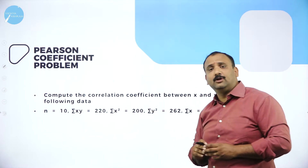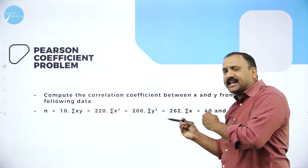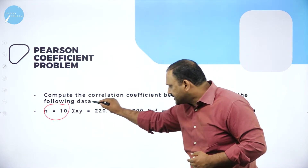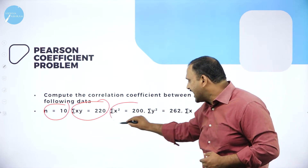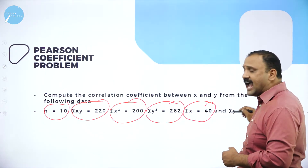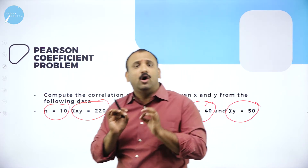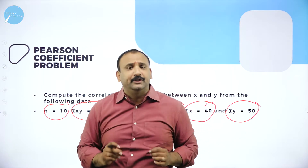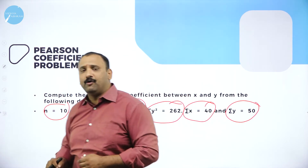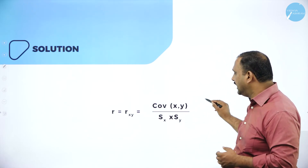Moving forward, let's look at a Pearson coefficient problem. We have the data here; we just put it into the formula and get the answer. n is given as 10, summation xy is 220, summation x squared is 200, summation y squared is 262, summation x is 40, and summation y is 50. In the exam, values are already printed on the question paper — take the values, fit them into the formula, and you will score full marks.